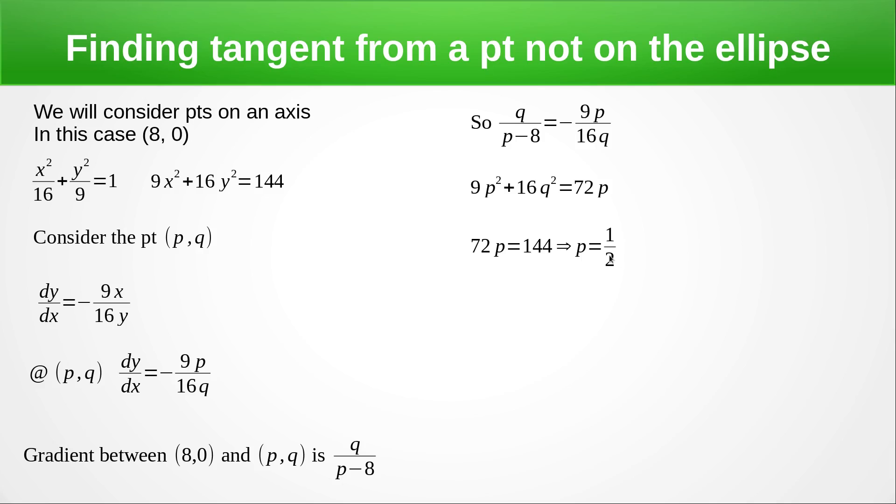Very easy to get q then from that situation. We can just substitute it back into here and the p value to get our q value. We end up with q = ±3√15 / 8. Now, I leave it to you to do that.